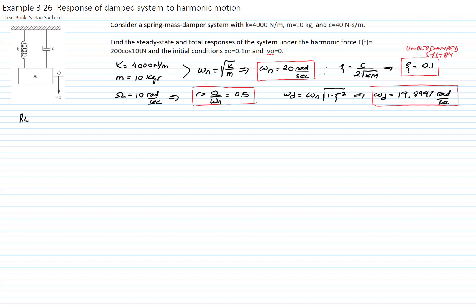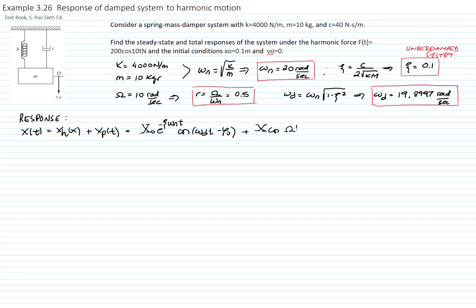Now we have all the parameters of the system and can calculate the response. Remember that the total response equals the homogeneous response plus the particular response. The homogeneous response is due to the initial conditions, and since it's an underdamped system, it equals the magnitude X0 times e to the negative zeta omega_n t, cosine of omega_d t minus a phase angle. The particular solution is X cosine of omega t minus phi, where omega is the frequency of the external force. The magnitude X of the particular solution is the static deflection F0 over k, multiplied by the magnification factor.